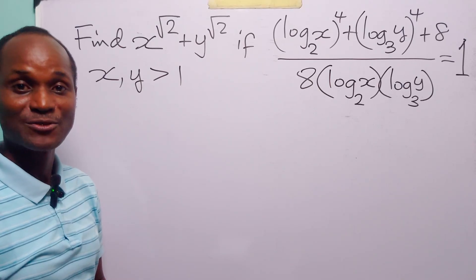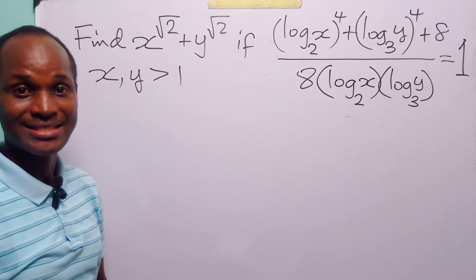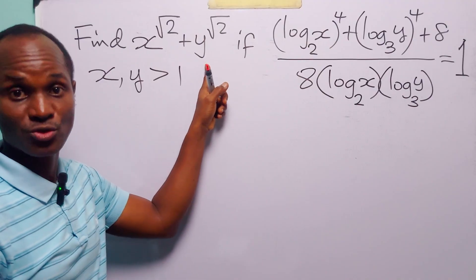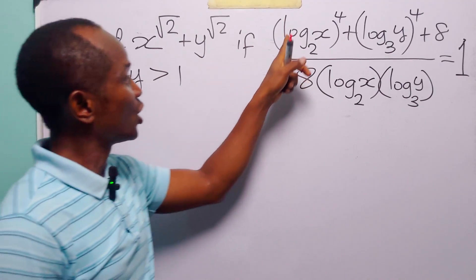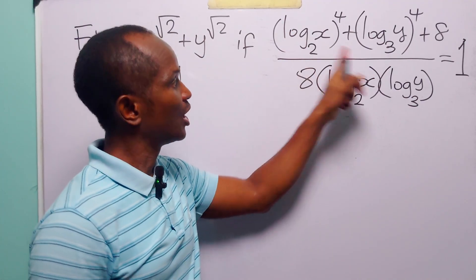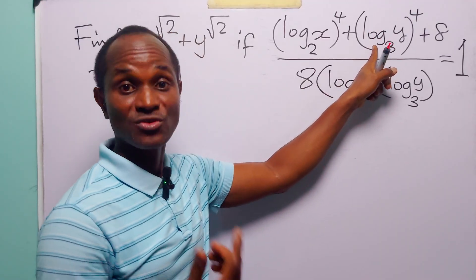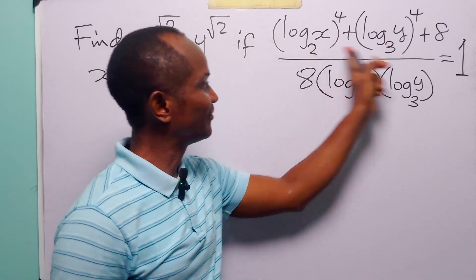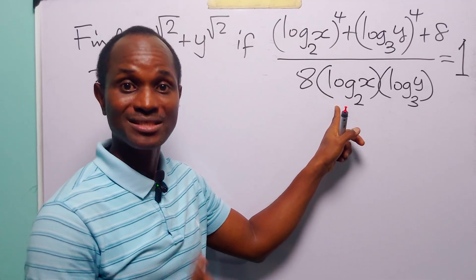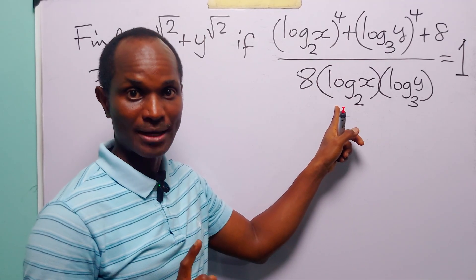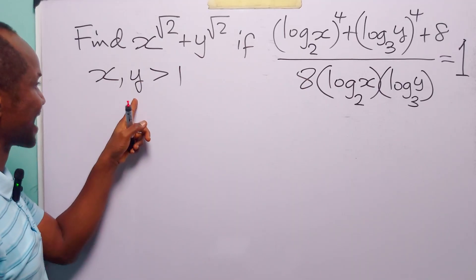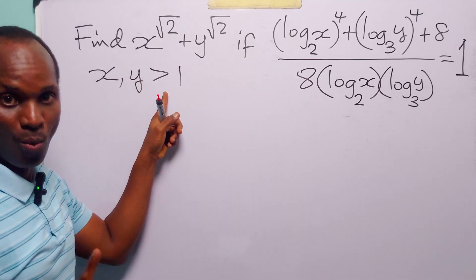Hello and welcome. In this math tutorial, our task is to evaluate x squared plus y squared, given that log base 2 of x to the power of 4 plus log base 3 of y to the power of 4 plus 8, divided by 8 times log base 2 of x times log base 3 of y, is equal to 1. We have also been told that both x and y are greater than 1.